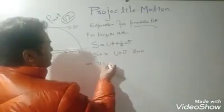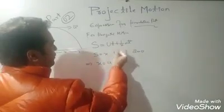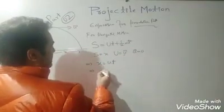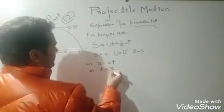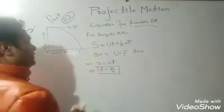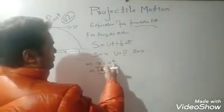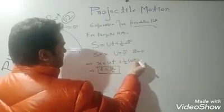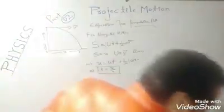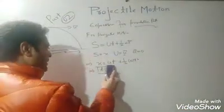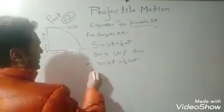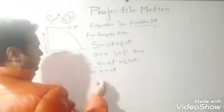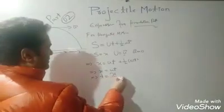So for horizontal motion: x = ut + ½(0)t² — which implies x = ut. Therefore t = x/u. This gives us the time in terms of horizontal distance x and initial velocity u.